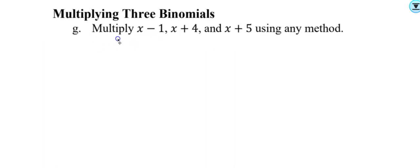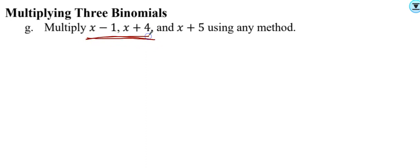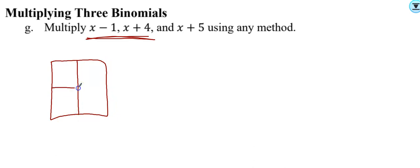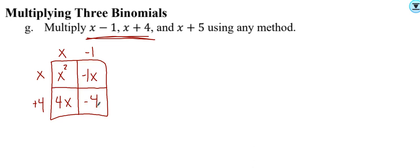First, multiply the first two polynomials: x minus 1 and x plus 4. I've got two terms and two terms, so I'll do the box method with two boxes on top and two on the side. x times x is x squared; x times negative 1 is negative x; x times 4 is 4x; and 4 times negative 1 is negative 4. Combining the diagonal like terms: x squared comes down, 4 minus 1 is 3, so positive 3x, and drop down negative 4.